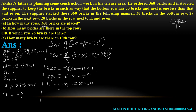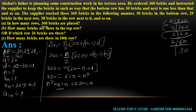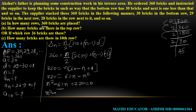Factoring 720: 720 divided by 2 is 360, divided by 2 is 180, divided by 2 is 90, divided by 2 is 45, and 45 = 9 × 5 = 3 × 3 × 5. The factor pairs that give a sum of 61 are 45 and 16 (since 45 + 16 = 61 and 45 × 16 = 720). So the equation becomes n² − 45n − 16n + 720 = 0.